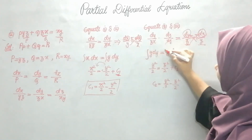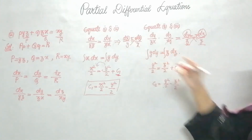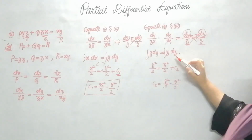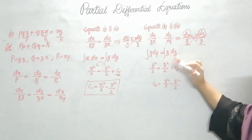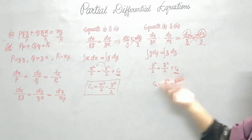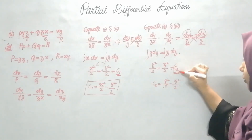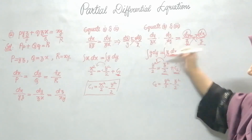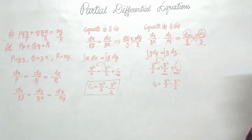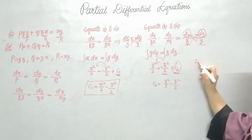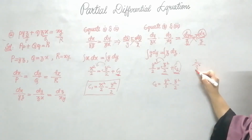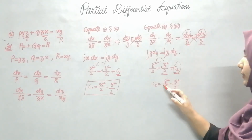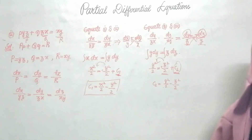Integrating y · dy = z · dz: the integration of y is y²/2 and the integration of z is z²/2, plus a constant C2. I need the value of C2, so I send z²/2 to the other side: C2 = y²/2 − z²/2.